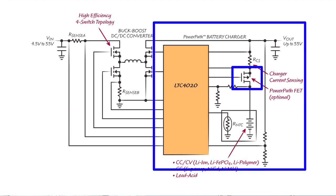An optional power pass FET can be used to disconnect the battery from the system when it is fully charged or during fault conditions.